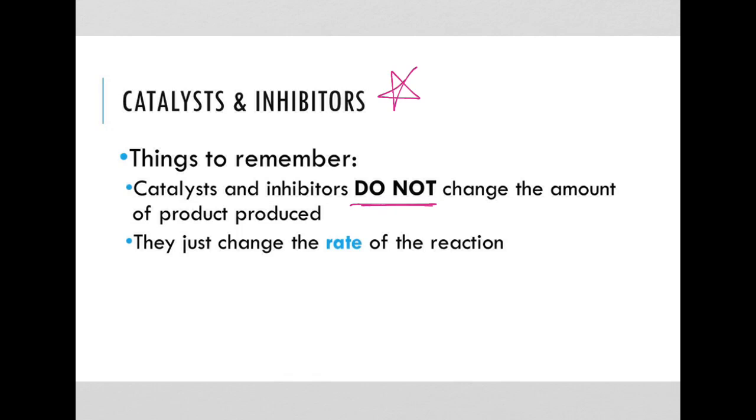Things to remember about catalysts and inhibitors: they do not change the amount of product that is actually produced. They just change the rate of the reaction.